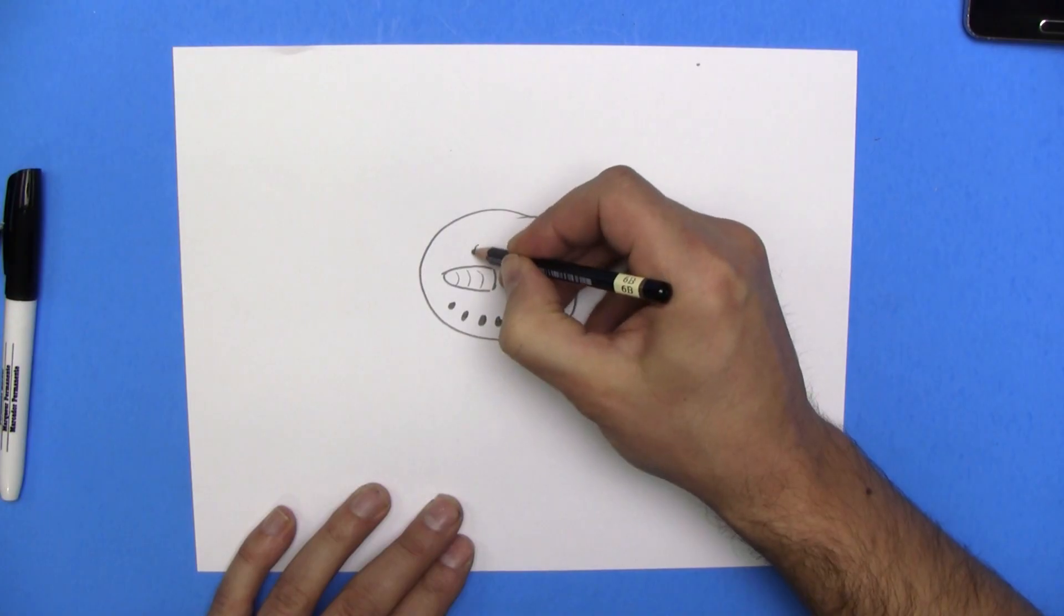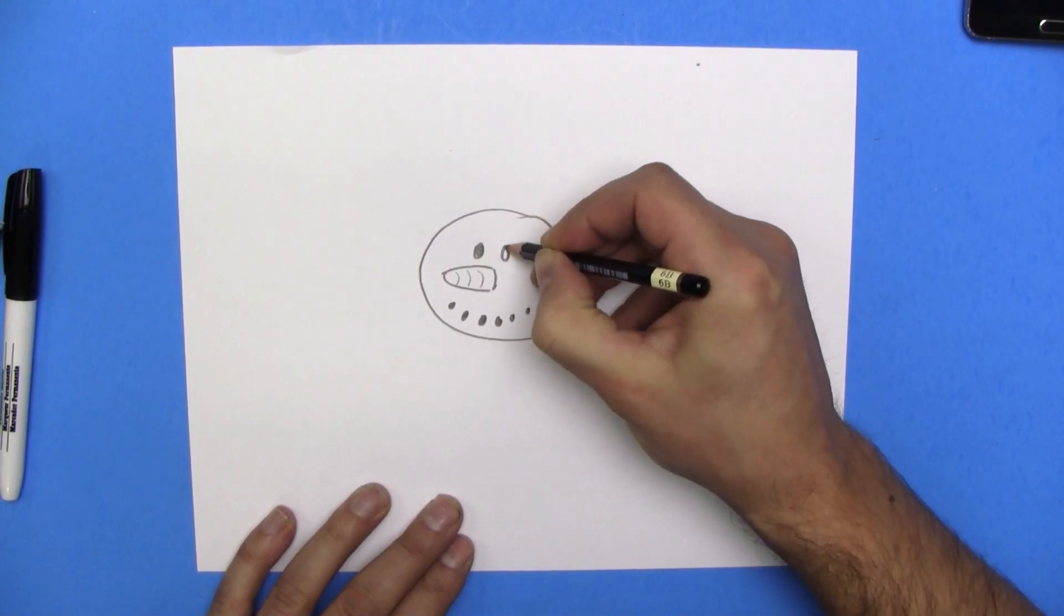Now we're going to do his eyes. More coal. Two circles. Yes.